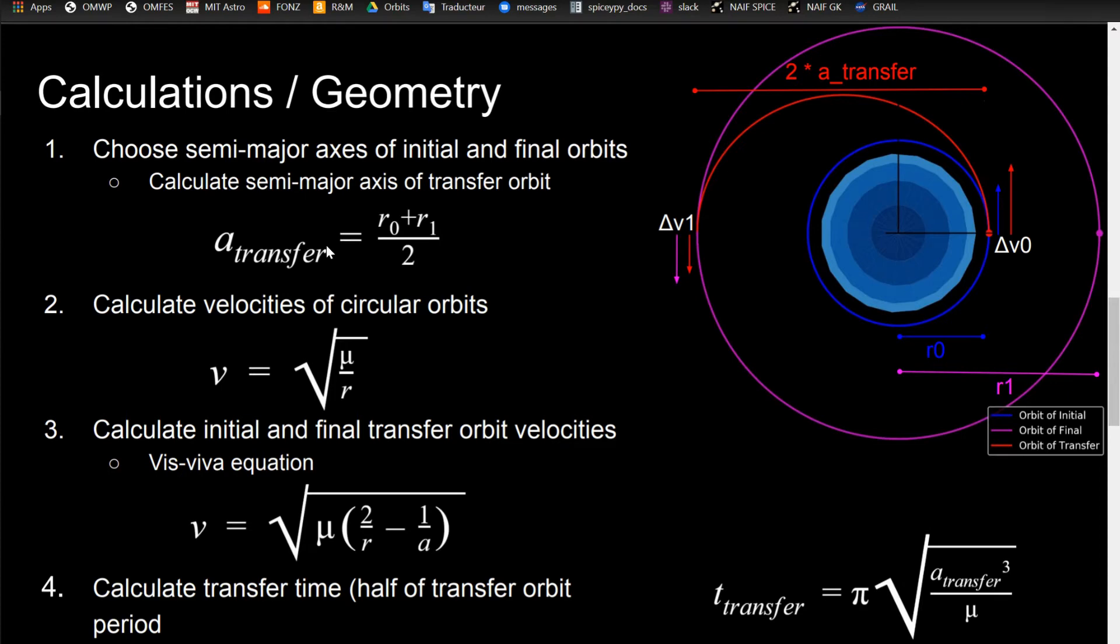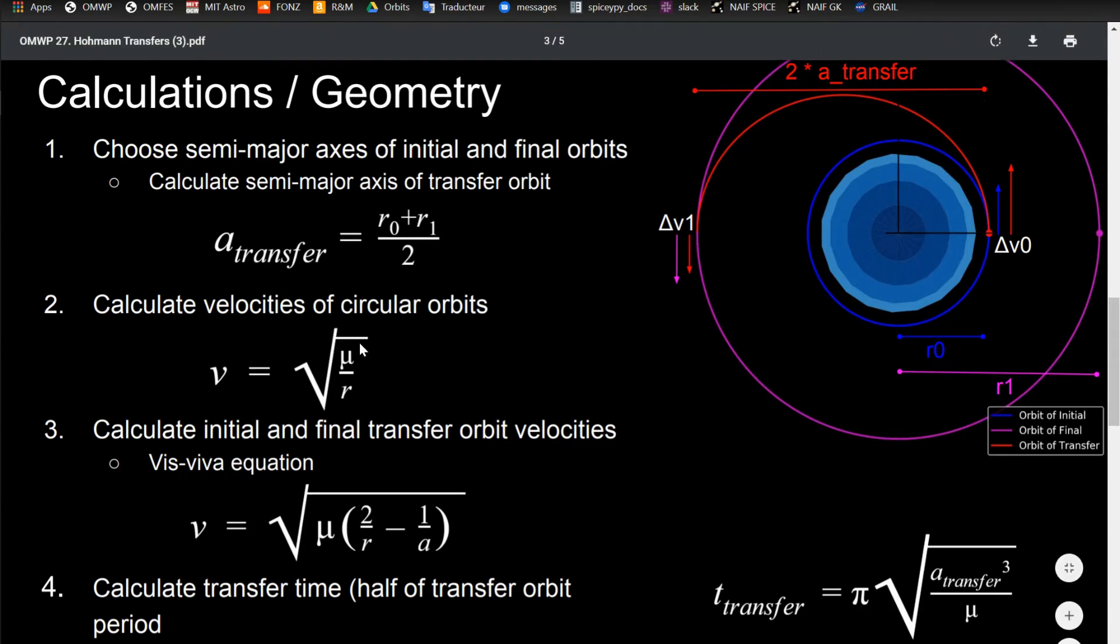The next thing you want to do is calculate the velocities of the circular orbits. This equation, v equals square root of mu over r, is only valid for circular orbits. So use square root of mu over r to calculate the velocity of circular orbits.